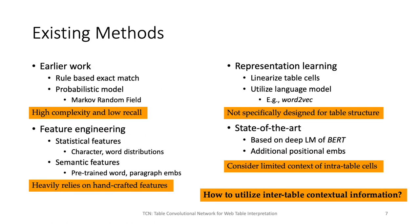There are some existing methods designed for column type and pairwise relation prediction. Earlier work relying on exact match and probabilistic models have high complexity and low recall values, which cannot be easily applied on large-scale datasets. Some feature-engineering-based methods heavily rely on handcrafted features and cannot be generalized well into different domains. Recent representation learning methods linearize table cells and use language models not specifically designed for table structure, and state-of-the-art methods are limited to considering only the context of intra-table cells. This naturally leads to the question: can we use contextual information outside the target table, and how can we actually use it?